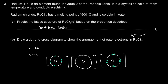Identify which element — radium or calcium — reacts with water at a faster rate and suggest how the observations would differ. Down the group, the rate of reaction increases because the valence electrons are further from the nucleus. The atoms are larger, so radium loses its electrons more readily — outer electrons experience greater shielding and weaker nuclear attraction. Radium would react at a faster rate.